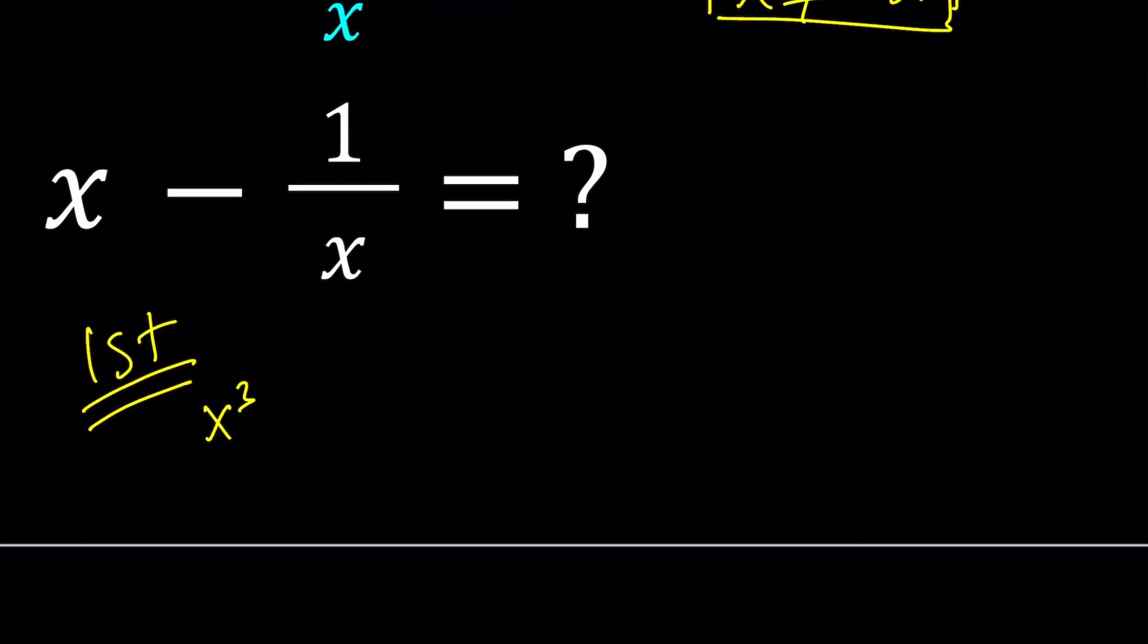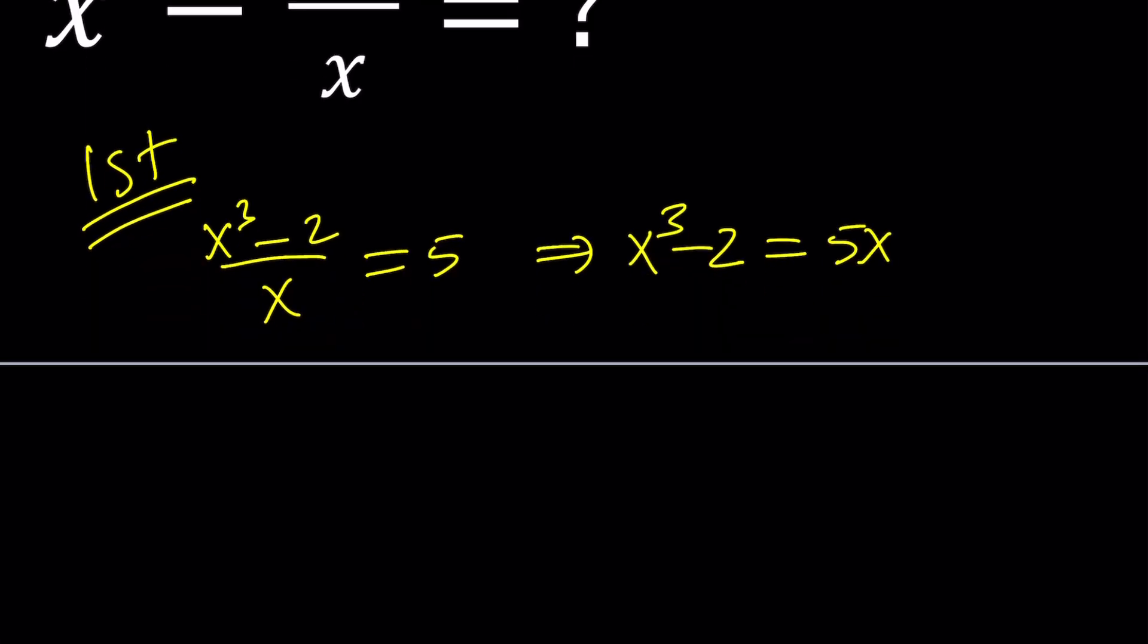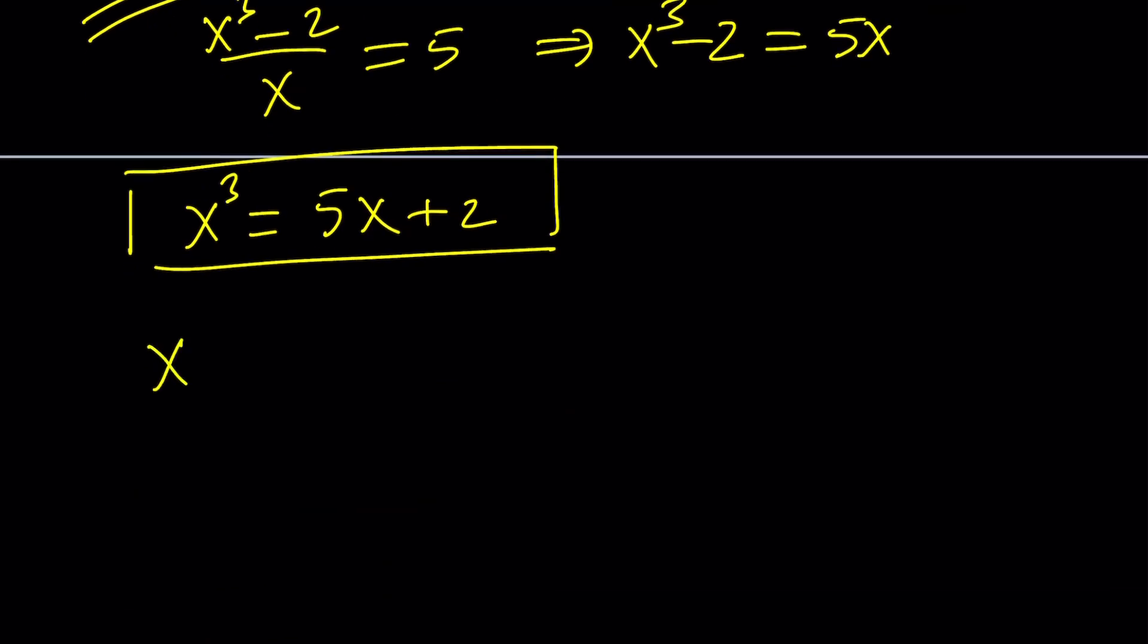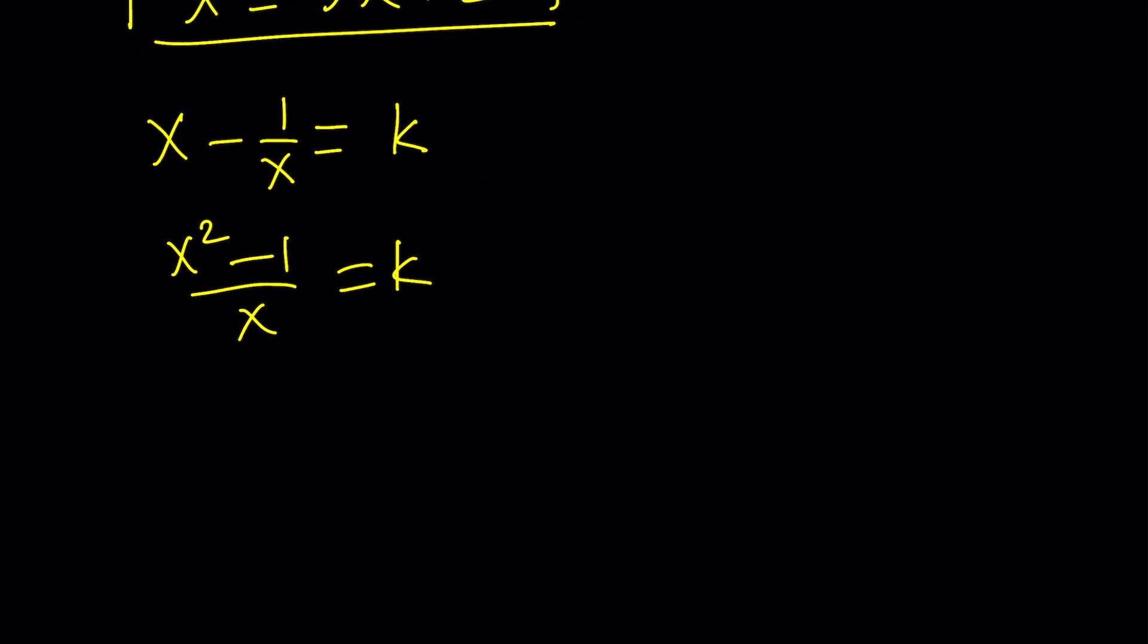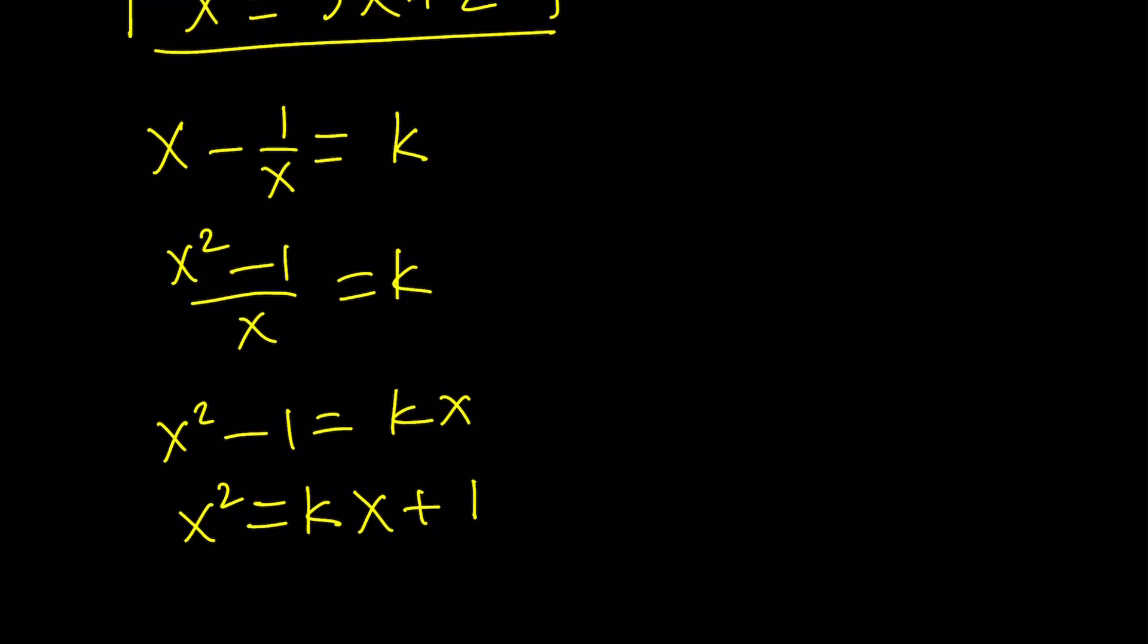What I just said is going to give you a clue for the third method. The first step is making a common denominator and cross-multiplying. That gives us x cubed minus 2 equals 5x, and from here, I can isolate x cubed and write it as 5x plus 2. So how can I use this information to find out what x minus 1 over x is? Let's set x minus 1 over x equal to k. My goal is to find the numerical value for k. I'm going to do the same thing here, cross-multiply, and write x squared as a linear term, just like what we did with x cubed.